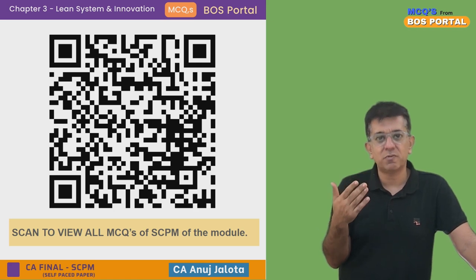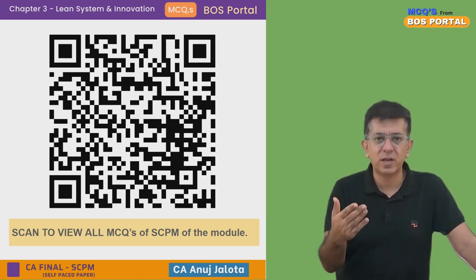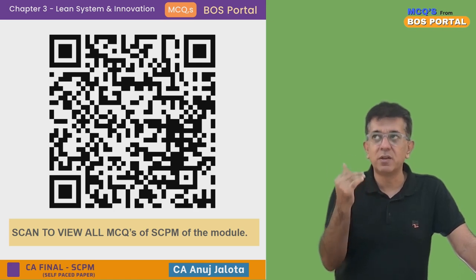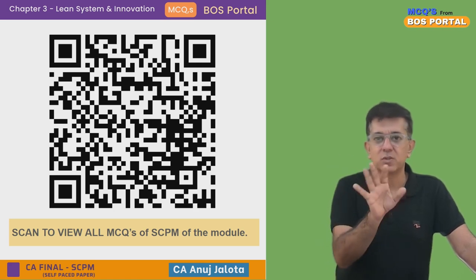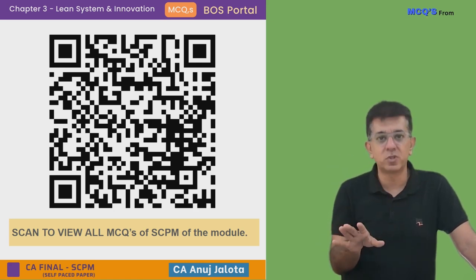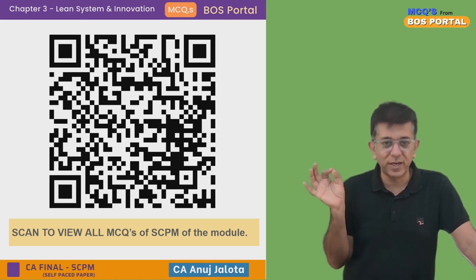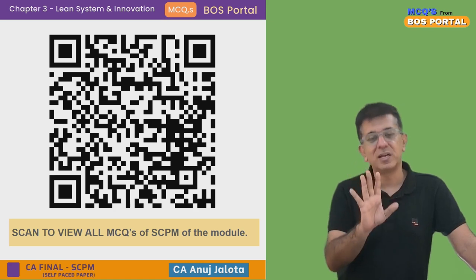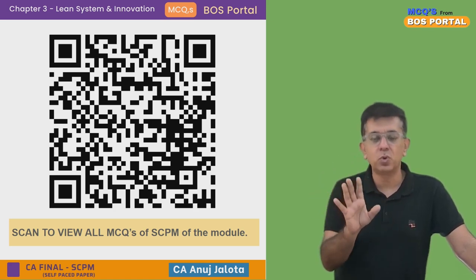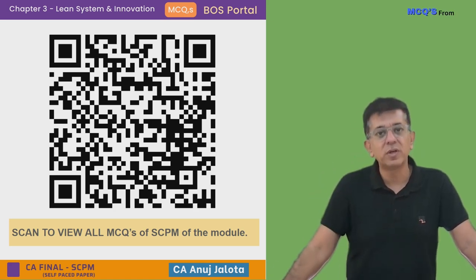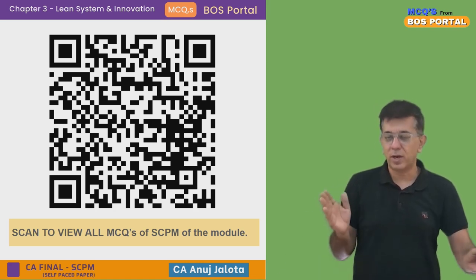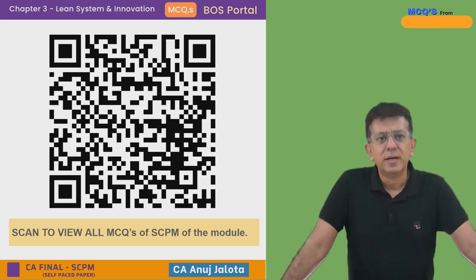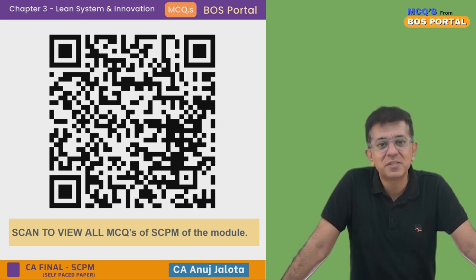Apply Kaizen Costing to yourself — do continuous improvements every now and then. If you're studying 5 hours, next month target 5.5, then 6, and so on. Don't aim for 15 hours right away — it's not humanly possible, and more study time is not correlated with more marks. Study smart: not too much, not too little. Decide what's good for you, and study only until your brain can absorb everything. Take care — we'll meet next time. Bye!